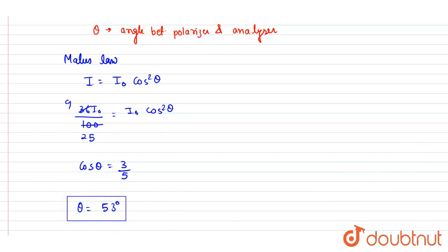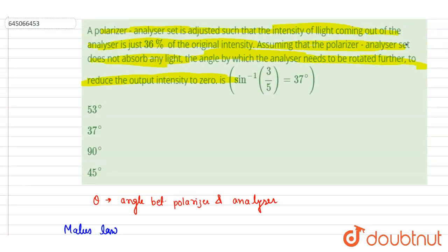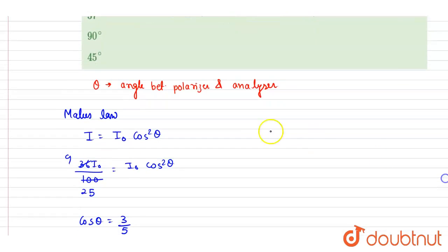Now if you see here, we want the angle by which the analyzer needs to be rotated further to reduce the intensity to zero. To reduce the intensity to zero, theta final should equal 90 degrees because at 90 degrees, cos θ will be zero.